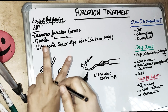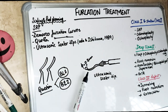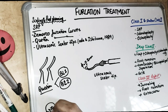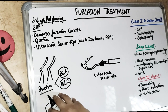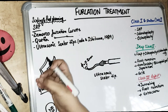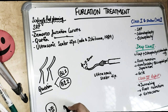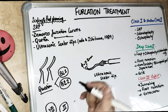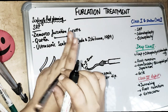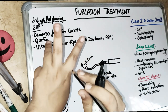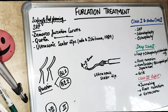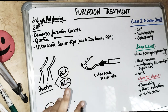In Grade 1, there is a supra-bony pocket and no penetration of the probe, and there is no radiographic change — very slight interradicular bone loss. Grade 2 is the cul-de-sac lesion with a definitive horizontal component. When we pass the probe, we cannot see it from the other end, so the other end is closed. Bone loss occurs only on one side — either palatal or buccal — so there is a partial penetration of the probe.